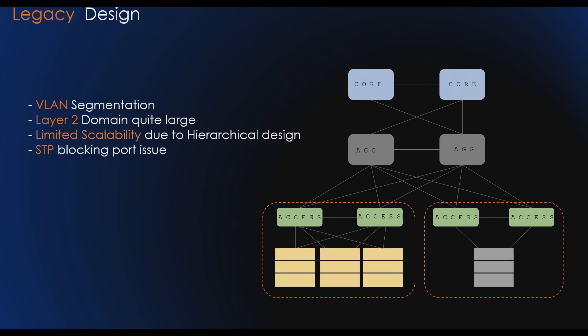The three-tier design for north-south traffic requires correct spanning tree configuration, and spanning tree issues are notorious for causing network outages, as spanning tree failures cause continuous loops. VLAN was used for segregation and routing between the core and the aggregation layer, providing limited scalability due to its hierarchical structure.